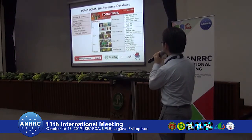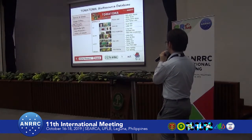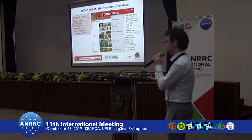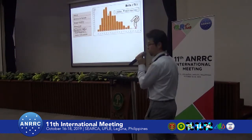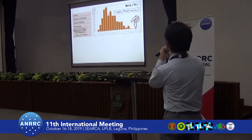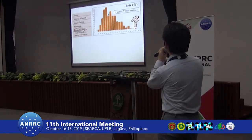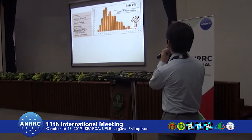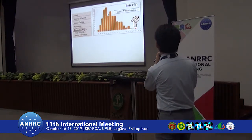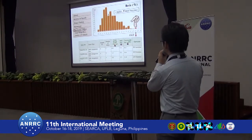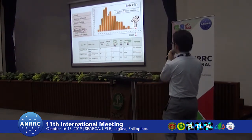After you find the mutant seed of interest, if you want to order, just add the seeds to the cart and you can get them somewhat like Amazon. Of course you need an MTA contract, but it's pretty easy. We are also providing metabolic information. Here I show the example of the Brix — the average fruit sugar content. If you are very interested in a high-sugar mutant, you can just click the bar here and see which specific line produces that very sweet fruit. You can also order these lines.